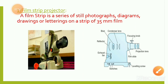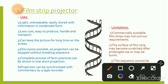The film strip projector has components including a projection lens, bulb, reflector, fan, switch, and condensation lens. Advantages of film strip: unbreakable, easily stored with information in condensed form, easy to operate, less cost, easy to produce, easy to handle and transport, can keep the picture for a long time on screen, discussion is possible, and it shows a complete process of farm practices.